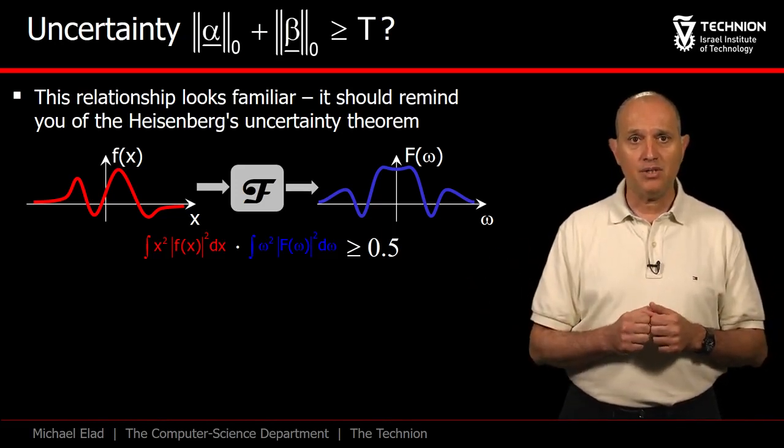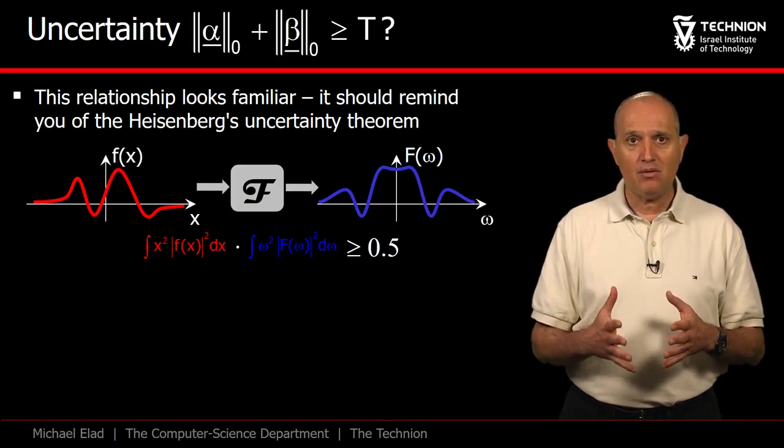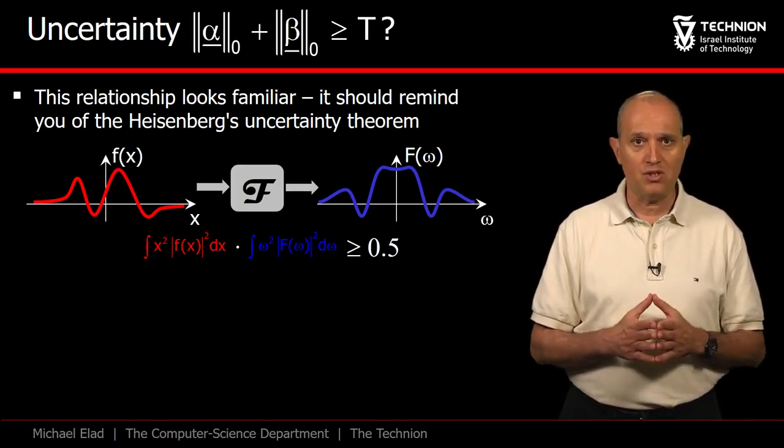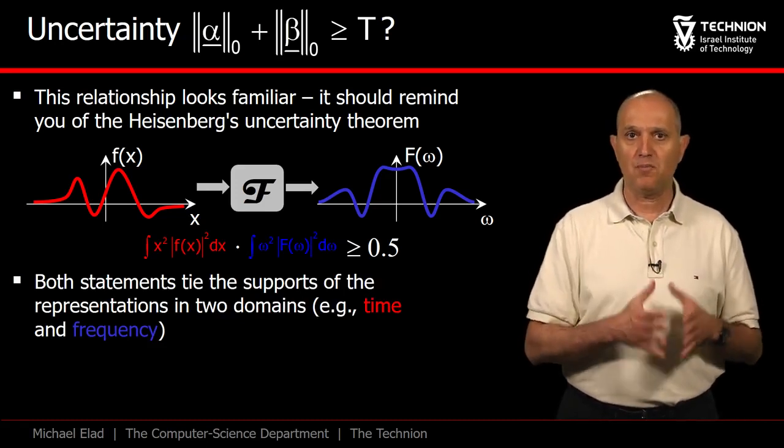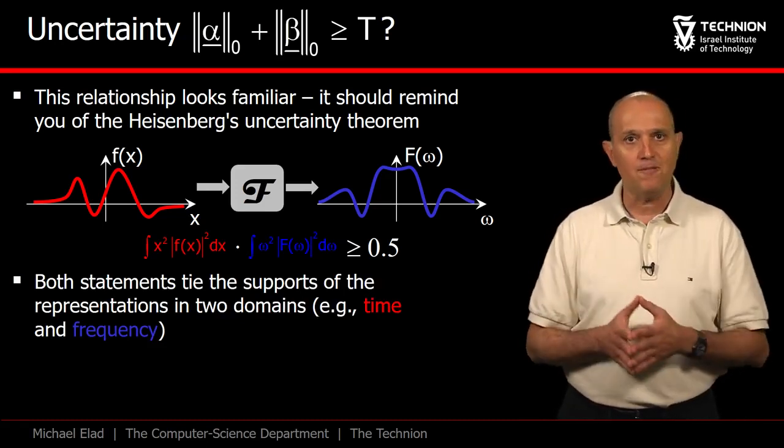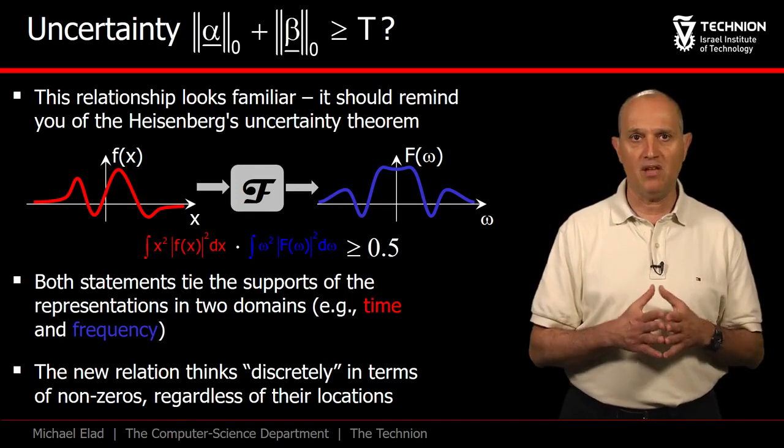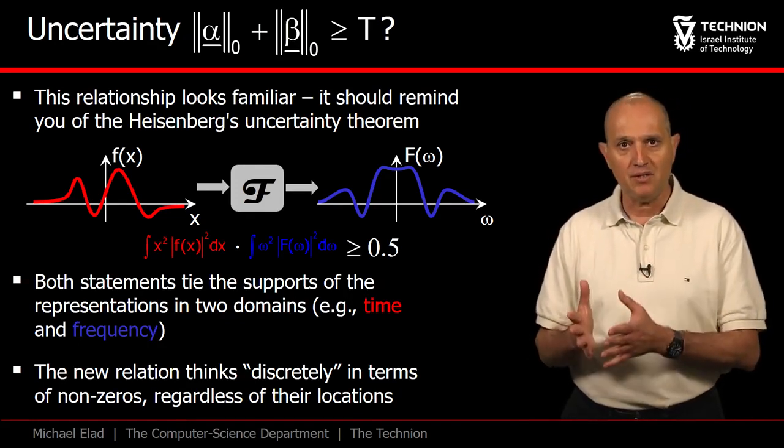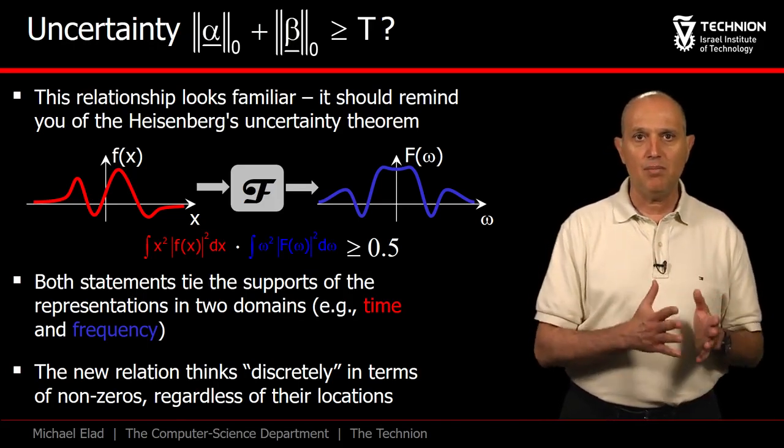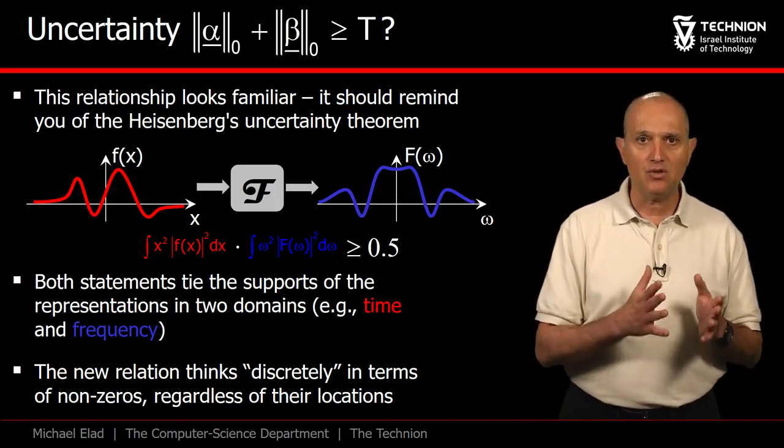Thus, Heisenberg's theorem is a claim about the behavior of the supports of the functions in two domains: location and frequency. Our statement is also about supports in two domains, Ψ and Φ, but our claim has a discrete flavor. Rather than talking in terms of concentration and variances, the new rule simply counts non-zeros regardless of their location.